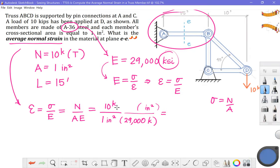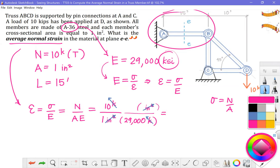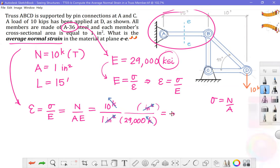So I'm going to toss that up in the numerator. So okay. My kips cancel out. My inches squared cancel out. Is that alarming? Nope. Because I'm trying to compute a strain. And the units of strain are unitless. Calculator time, 10 divided by 29,000, best expressed in decimal form like this. Or rather, engineering notation form: 345, E minus 6.